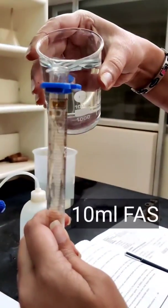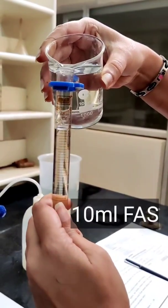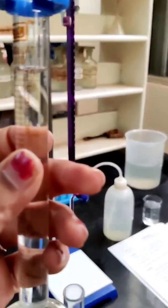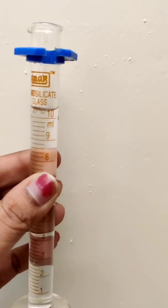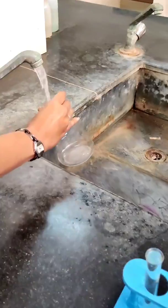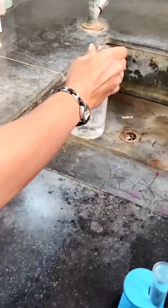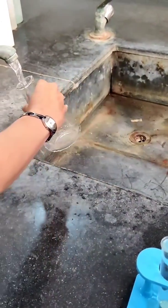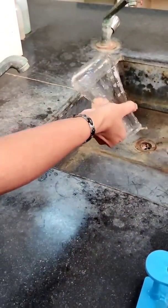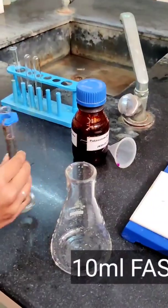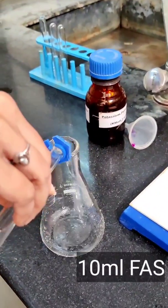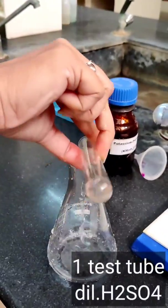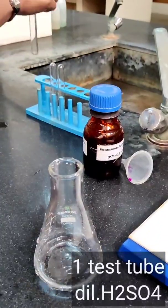Now, take 10 ml of FAS solution in a measuring jar. Transfer it into a conical flask. We are using a measuring jar instead of a pipette. Add one test tube of dilute sulphuric acid.